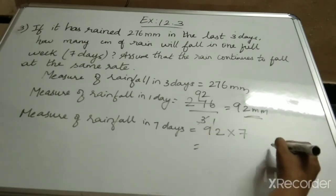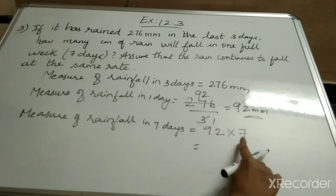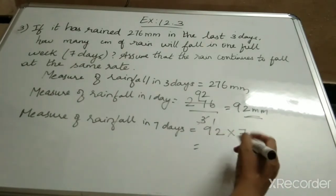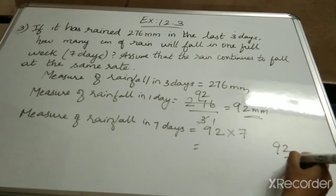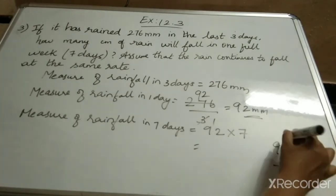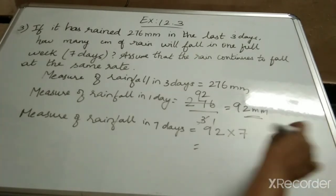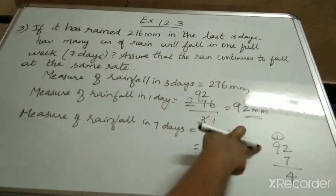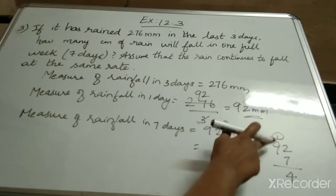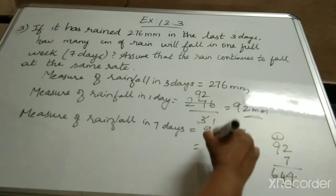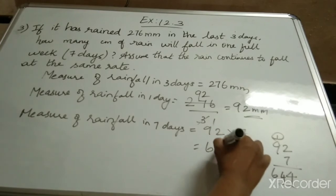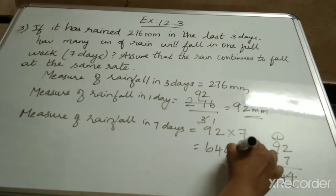So when you multiply 92 and 7: 7 twos are 14, carry over 1. 7 nines are 63, 63 plus 1 is 64. So 644 mm.